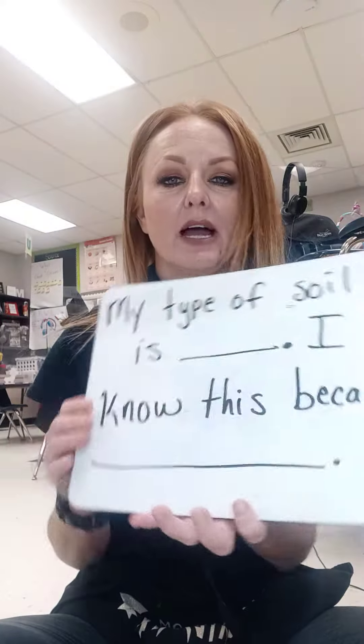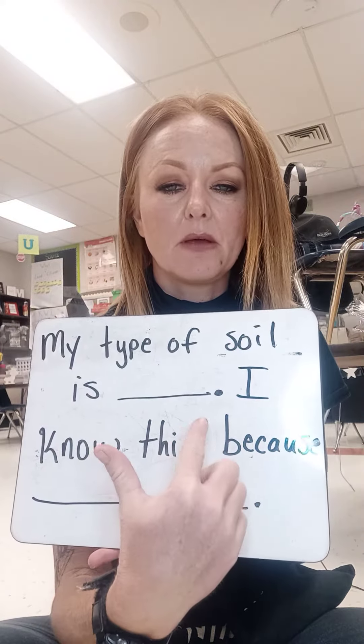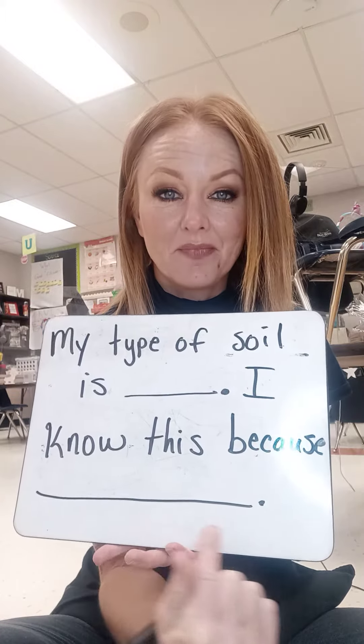Okay, so here is your assignment. If you're at home, I want you to go outside around your house and pick up a little bit of soil. And using what you know or what you've learned from the video, decide what kind of soil that you have — is it clay, is it silt, is it sand? Once you are soil detectives and you know what kind of soil you think you have, you will get a piece of paper and write: my type of soil is. I know this because.